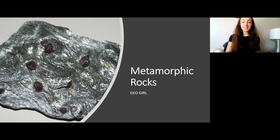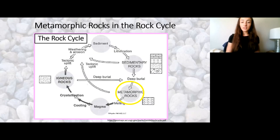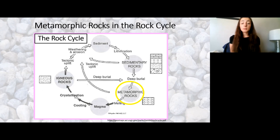So let's get started with the rock cycle and metamorphic rocks. Metamorphic rocks are those rocks in the rock cycle that form from deep burial and alteration of igneous, sedimentary, and previous metamorphic rocks that are subjected to really extreme heat and pressure due to this burial.